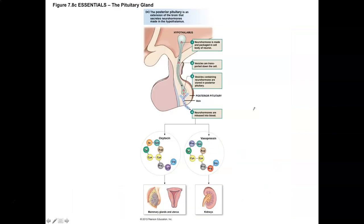Let's take a look at the posterior pituitary gland, or the neurohypophysis. We're talking about neurohormones released into the cardiovascular system. The two hormones to focus on are oxytocin and vasopressin. Another name for vasopressin is antidiuretic hormone, abbreviated ADH.